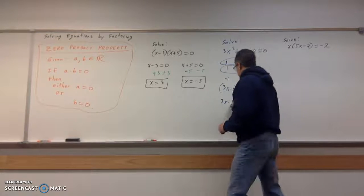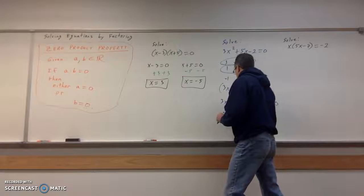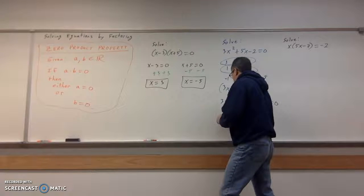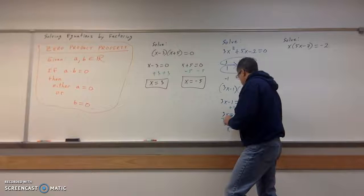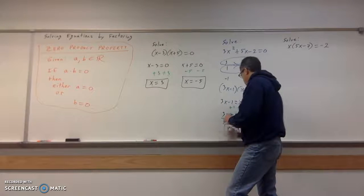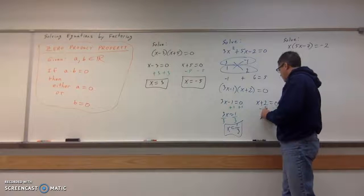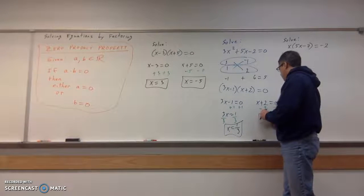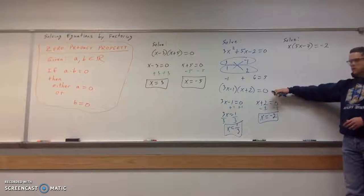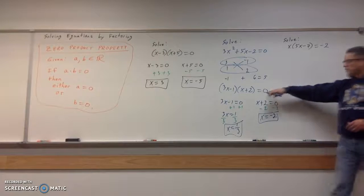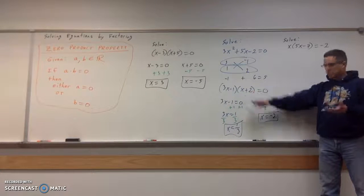But on this one, we're going to add one to both sides. So 3x equals one. I'll divide by three. So one of my answers is x equals one third. And the other answer, I'll subtract two to both sides. x equals negative two. Like I said a second ago, from this step, you can actually pick out your answer. Now it's going to be opposite of that side. So if you've got x plus two, your answer is x equals negative two.